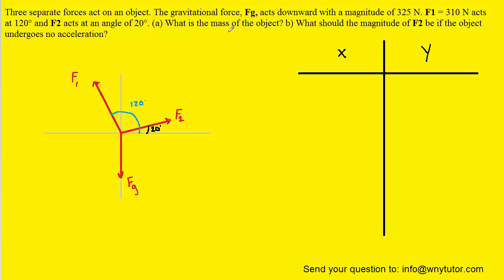In part A, we're asked for the mass of the object, and to solve for the mass, we're going to consider the gravitational force. The gravitational force is equal to the mass times the acceleration due to gravity, and we can solve this equation for the mass by dividing both sides by g. So when we do that, we can see that the mass is the gravitational force divided by g.